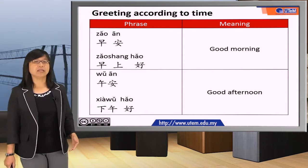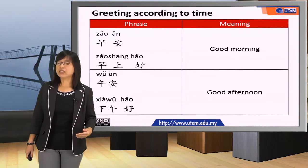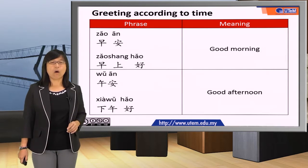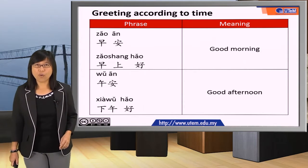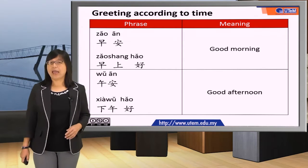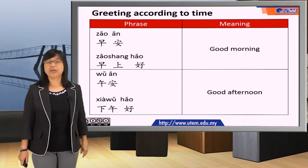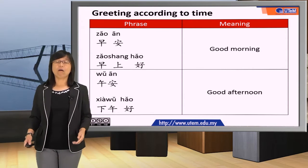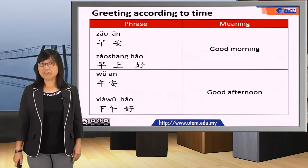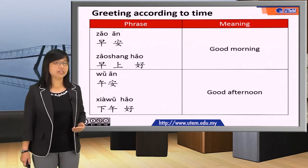When you meet a person in the morning, you can use this phrase to greet him: 早安 or 早上好, which means good morning. And when you meet someone in the afternoon, you can say 午安 or 下午好, which means good afternoon. Please repeat all these phrases.